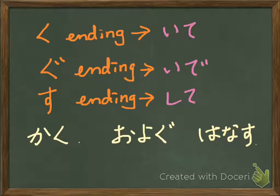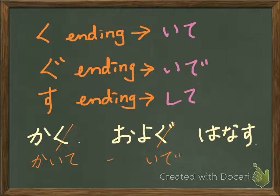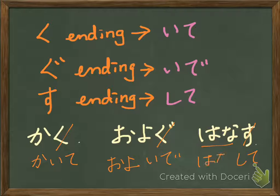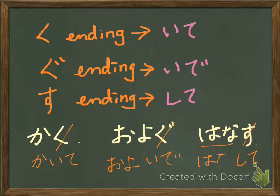There are some more endings. Ku ending — change it to ite. Gu ending — change it to ide. Su ending — change it to shite. So, kaku → kaite (te-form). Oyogu — gu changes to ide — so oyoide is the te-form of oyogu (to swim). Hanasu — su changes to shite — so hanashite is the te-form of hanasu.